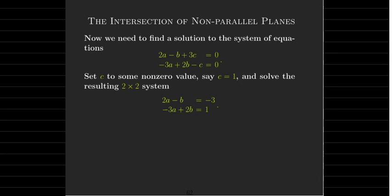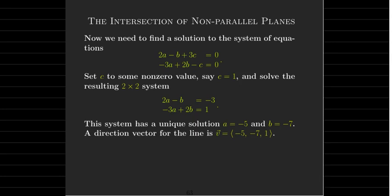In this case, setting c equals 1 is no problem. We get a solution to this equation or system of equations, with a equals negative 5 and b equals negative 7. And so our direction vector can be taken as negative 5, negative 7, and 1.